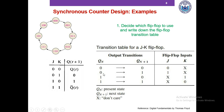To complete the second row of the transition table, we ask what JK values could have caused the 0 to 1 transition. We find from the characteristic table that this is possible when J=1, K=1 and also when J=1, K=0. So we write J=1 and K=X in the second row. In this manner, we complete the remaining rows of the transition table.